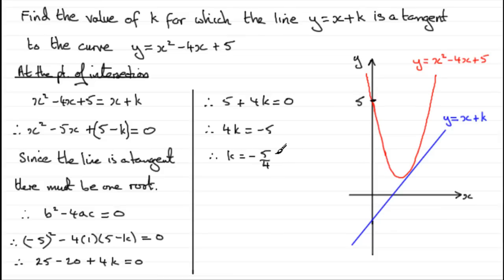Does that look right? Well yes, it does actually, because if k is minus 5 quarters, this line clearly is going to intersect the y-axis down at minus 5 quarters. It might be worthwhile putting that on: minus 5 over 4.